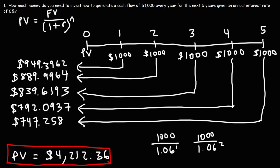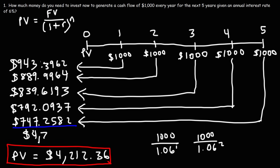Now we're going to take the sum total of these five numbers. I do need to make one small correction: $1,000 divided by 1.06 raised to the first power is not $949 but $943. So let me correct that. Adding these five numbers together gives you the same answer: $4,212.36. That's another way to calculate the present value of an annuity.